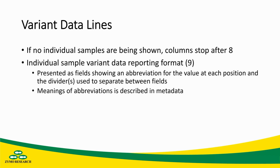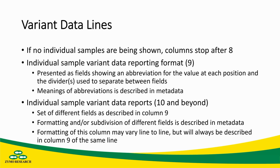If there are individual samples being shown, there will be at least column nine and ten. Column nine will show the format of these individual sample reports, with abbreviations being shown that are defined in the metadata section and the dividers between these different fields being defined as well. Following column nine, there will be one column per individual report used to show the individual sample's data. How these are presented is shown in column nine, with the formatting and meaning of each field defined in the metadata section.